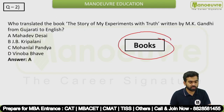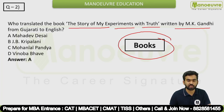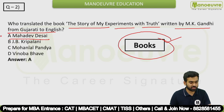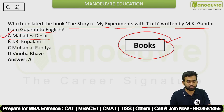Question 2 is a books-related question. Who translated the book 'The Story of My Experiments with Truth' written by M.K. Gandhi from Gujarati to English? The answer is Mahadev Desai — option A is correct. This is a static question related to books.